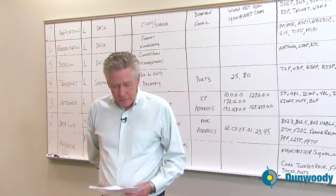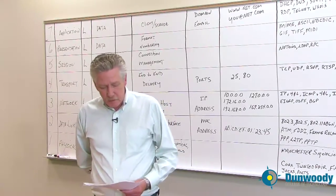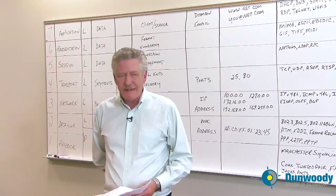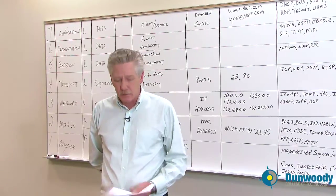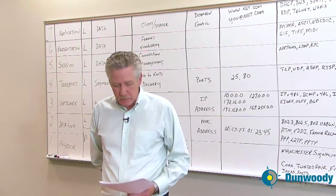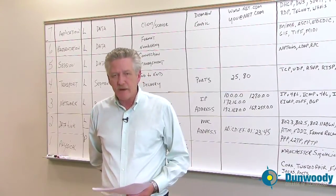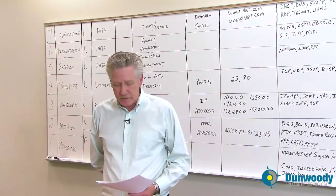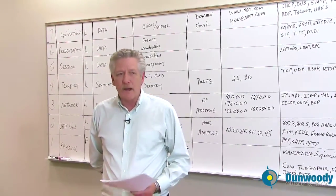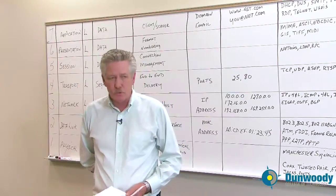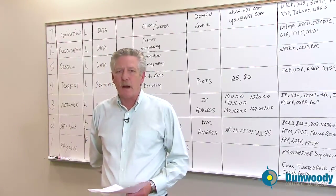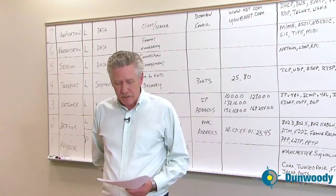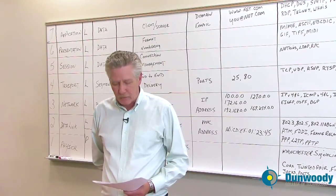The first one is what's known as the ARPANET reference model, which is RFC 871 — a great read. That was invented back in the early days of the internet. The model was formalized in September of 1982. It's a three-layer model, and later on in one of these segments I'm going to be showing you that three-layer model.